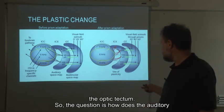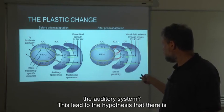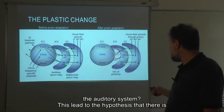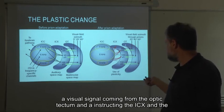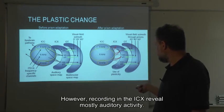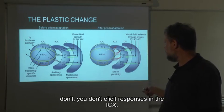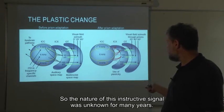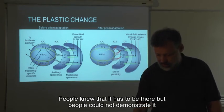The question is: how does the auditory system know about the shift in the visual system, since the plasticity occurs in the auditory system? This led to the hypothesis that there is a visual signal coming from the optic tectum instructing the ICX how to behave. However, recordings in the ICX reveal mostly auditory activity — presenting visual stimuli does not elicit responses in the ICX. So the nature of this instructive signal was unknown for many years. People knew it had to be there, but could not demonstrate it explicitly.